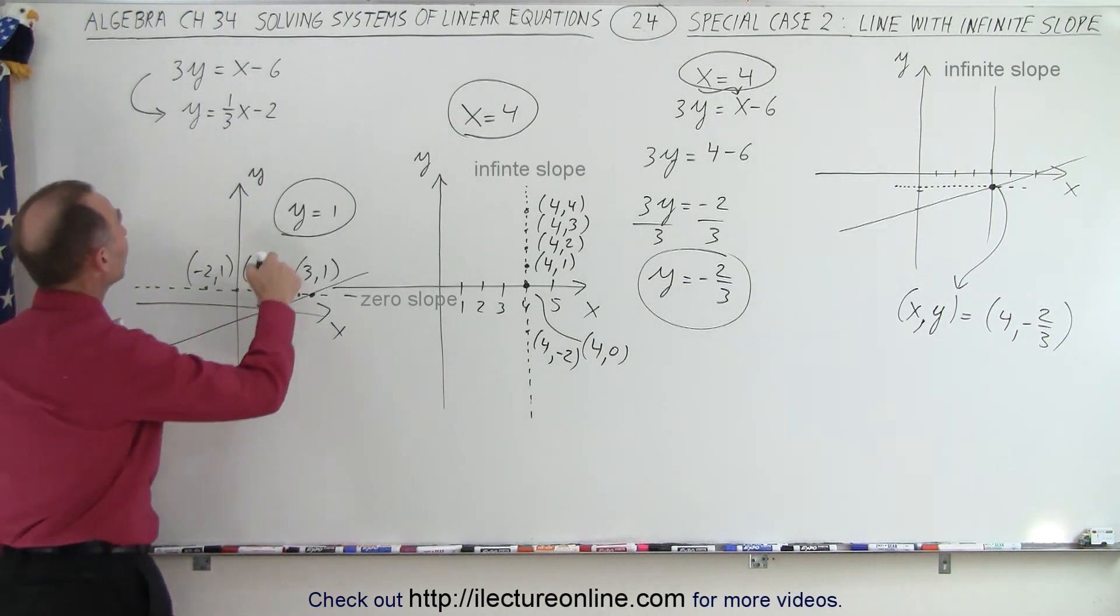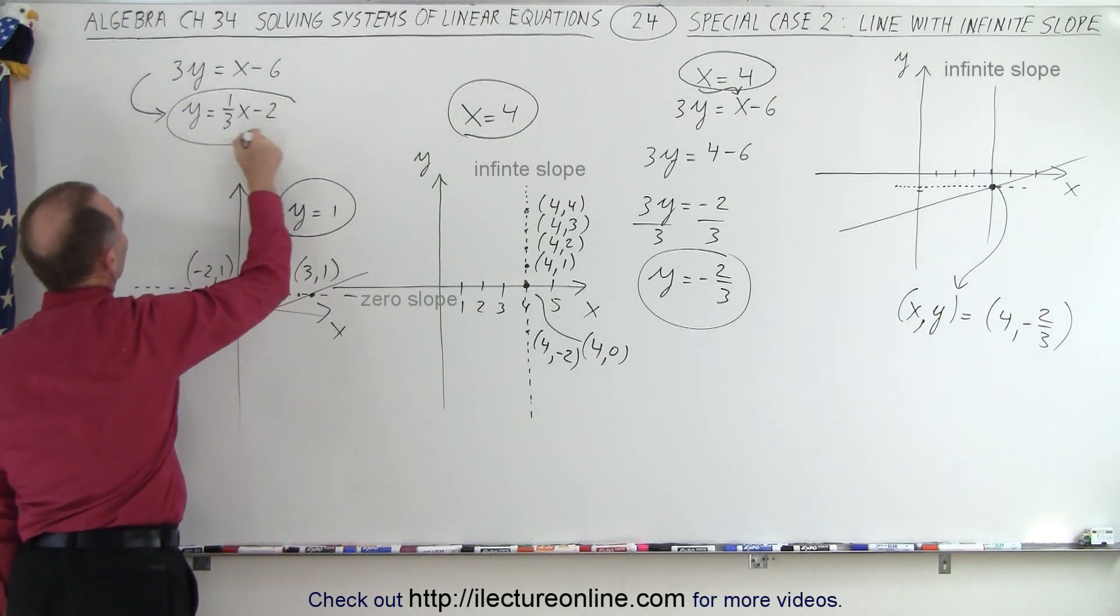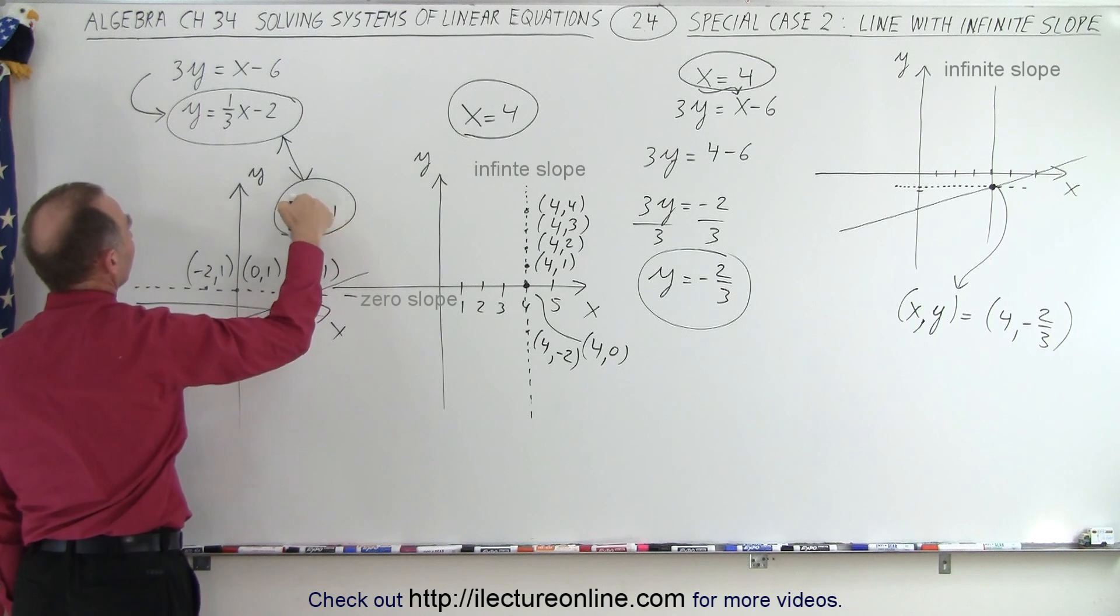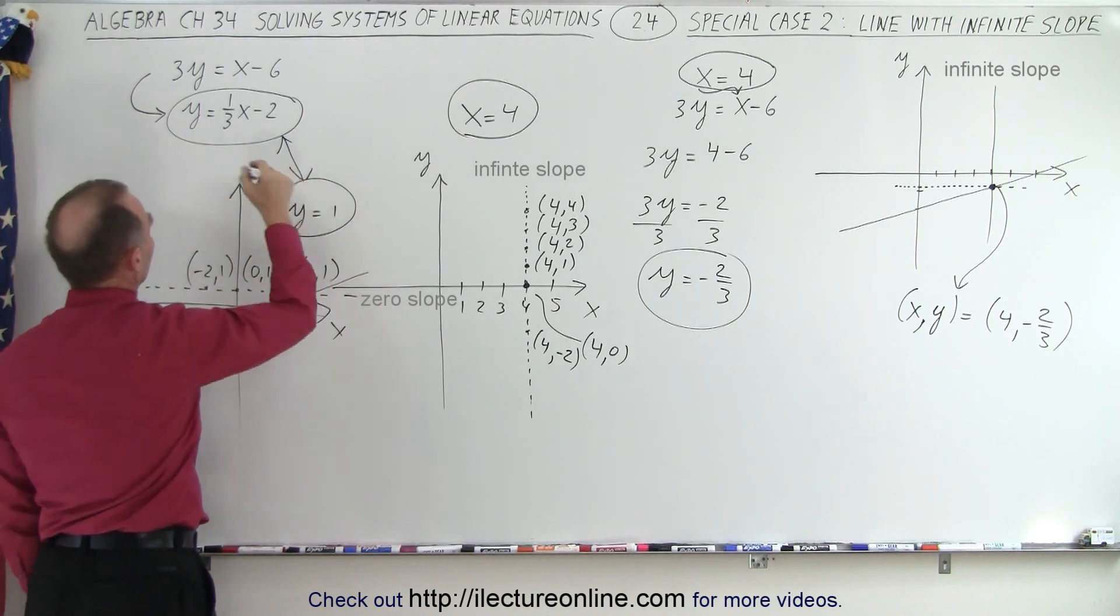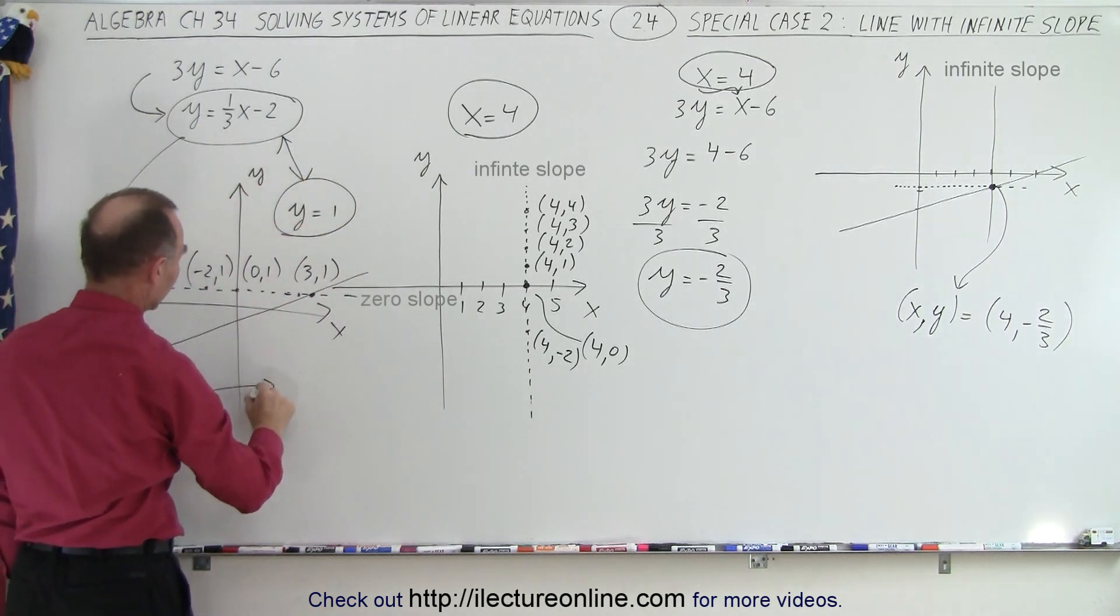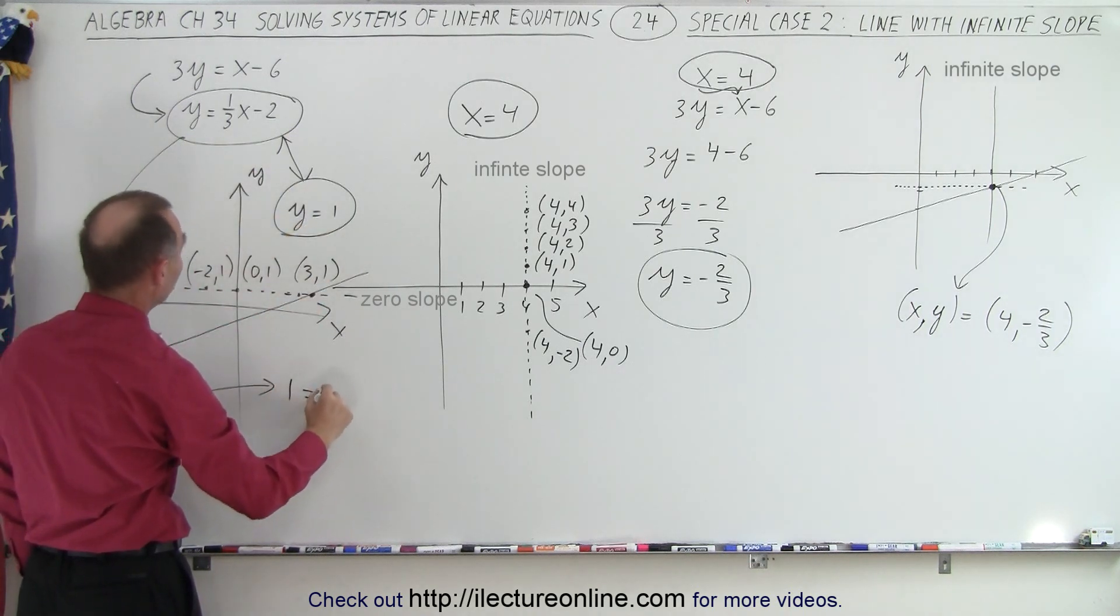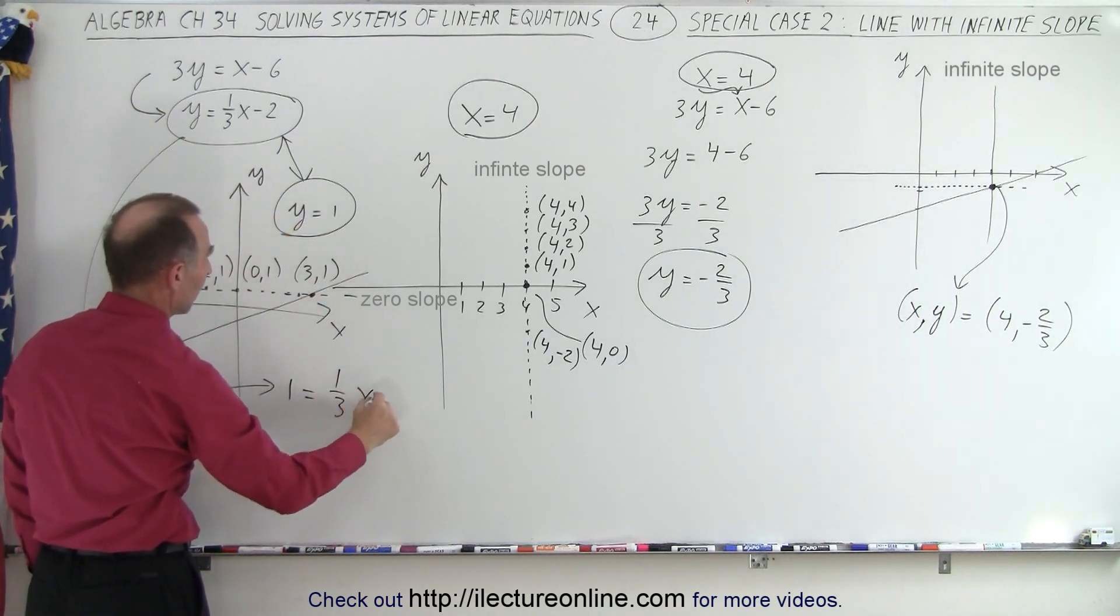So then you just define the x by plugging it in. And then if you solve these simultaneously, so if you take this equation right here and you find this equation and you solve those simultaneously, then you plug in the value for y equals 1. So that means that you end up with something like this. So instead of y, you write y equals 1. So you end up with 1 is equal to 1/3 x minus 2.